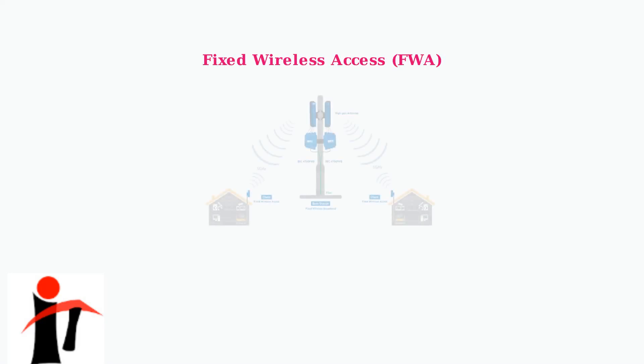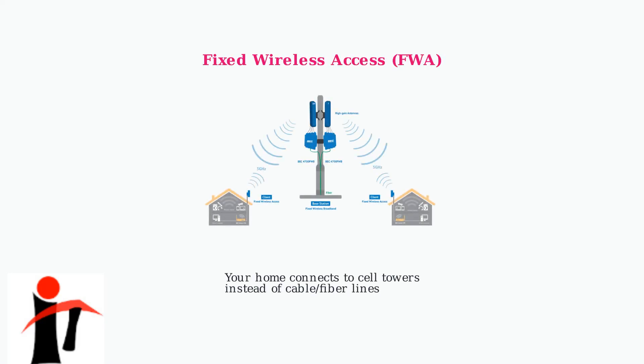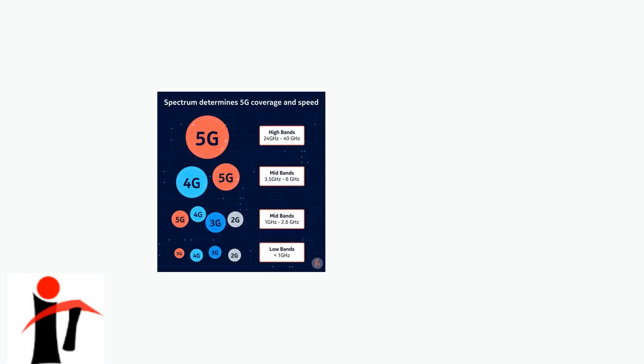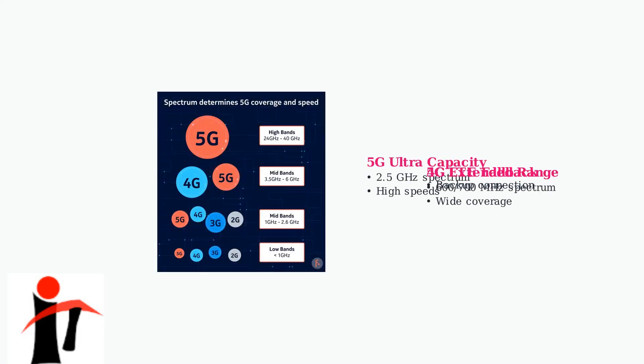T-Mobile home internet uses fixed wireless access technology, connecting your home to cell towers instead of traditional cable or fiber lines. This system relies on three main network types: 5G ultra-capacity on 2.5 GHz spectrum for high speeds, 5G extended range on 600 and 700 MHz for wide coverage, and 4G LTE as a fallback when 5G is unavailable. Problems can occur at any of these network layers.